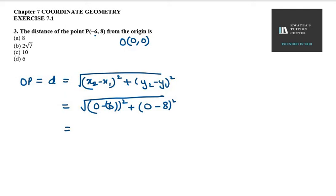So it will be positive 6 whole square. It is 36 and -8 whole square. It is 64.